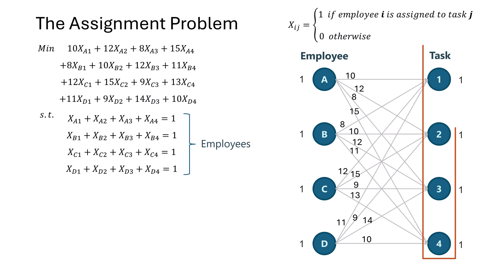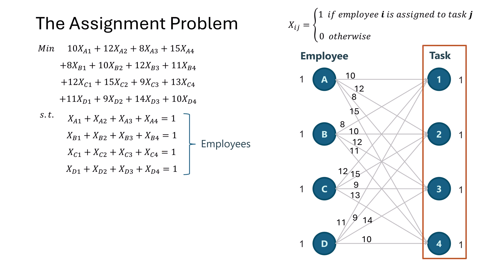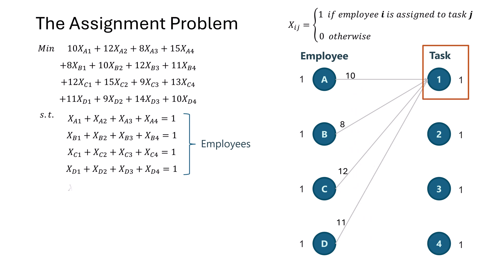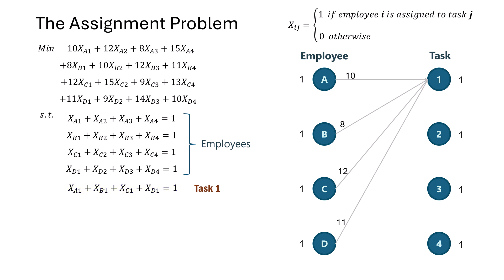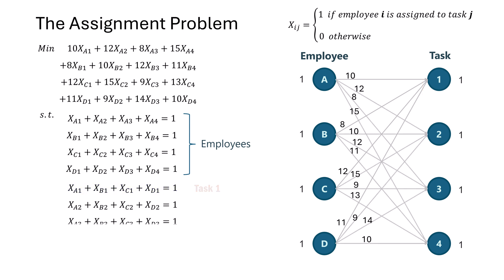Now let's consider the tasks. Each task must also be assigned to one employee. For task 1, the constraint is x_a1 + x_b1 + x_c1 + x_d1 = 1. This means task 1 must be assigned to employee A, B, C, or D, and to only one of them. We write similar constraints for tasks 2, 3, and 4, ensuring that each task is assigned to only one employee.